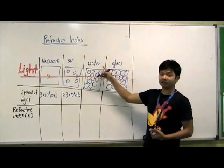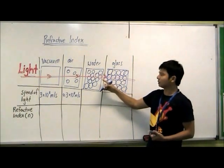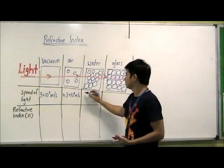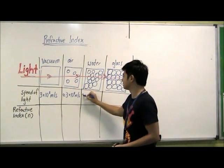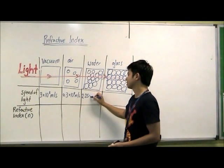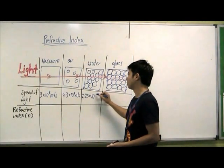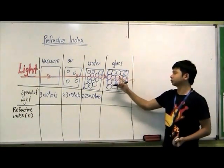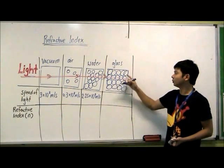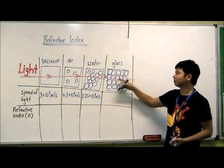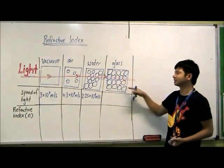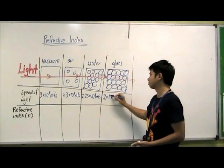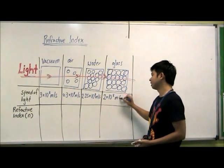When the light passes through water, the speed of light will decrease by quite a lot because there are a lot of particles inside. The speed will become about 2.25 times 10 to the power of 8 meters per second. And as it passes through glass, which is the densest because it has the most number of particles inside a fixed volume, the speed will become 2 times 10 to the power of 8 meters per second.